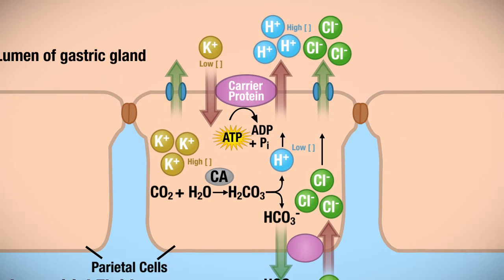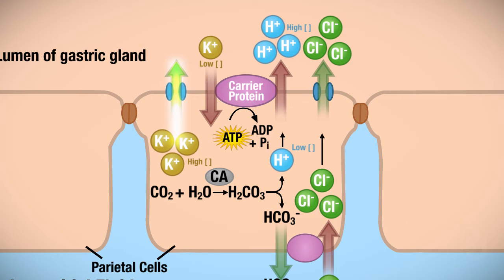Once those potassium ions reach a high concentration in the cytoplasm, they're going to move back out through a channel into the lumen. So this is facilitated diffusion.